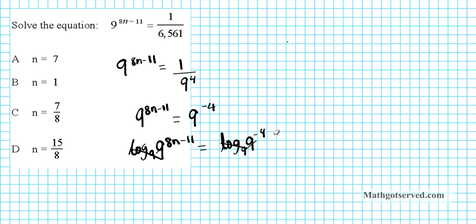You'll be left with 8n minus 11 equals negative 4. And let's get n isolated. We'll add 11 to both sides. We have 8n equals positive 7. And then divide both sides by 8. And then you have n equals 7 over 8. So our final answer is option letter C.